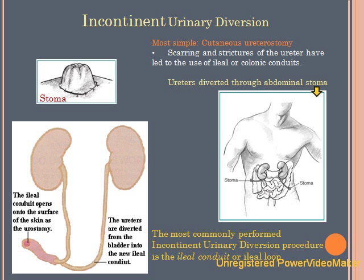The most direct method is a ureterostomy. The surgeon detaches one or both ureters from the bladder and brings them to the surface of the abdomen with the formation of an opening — a stoma — to allow passage of urine. A ureterostomy requires a collecting pouch placed over the stoma because there are no muscles around the stoma to control the flow of urine. This method is very rarely used because of the resulting scarring and stricture of the ureters.